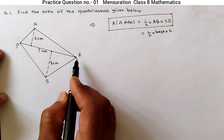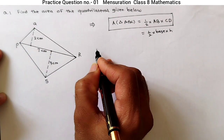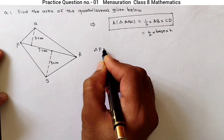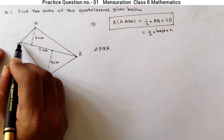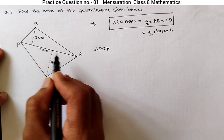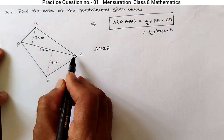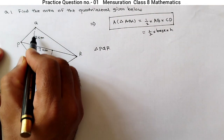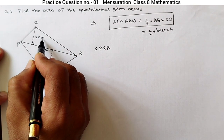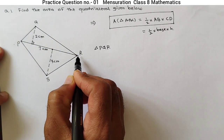Now just divide this quadrilateral in two parts, so we will get two triangles. The first triangle is PQR, where PR is given 7 cm. If we consider PR as the base, then the perpendicular distance — the height — is given as 2 cm.